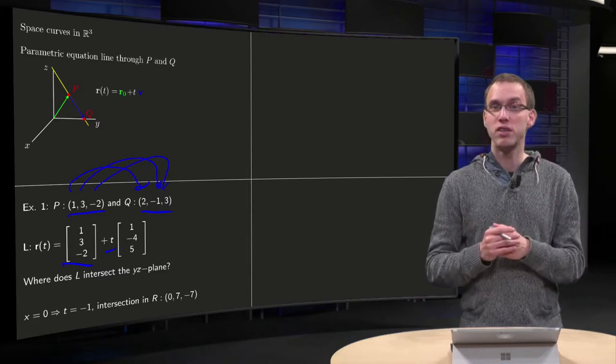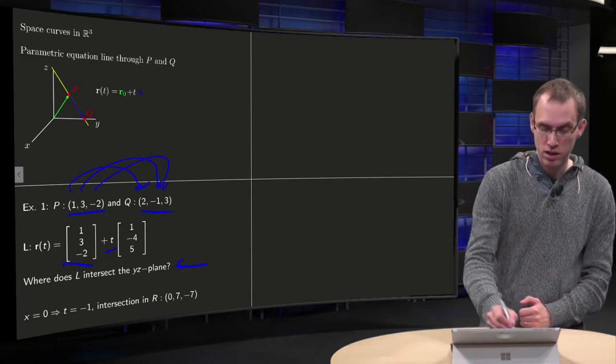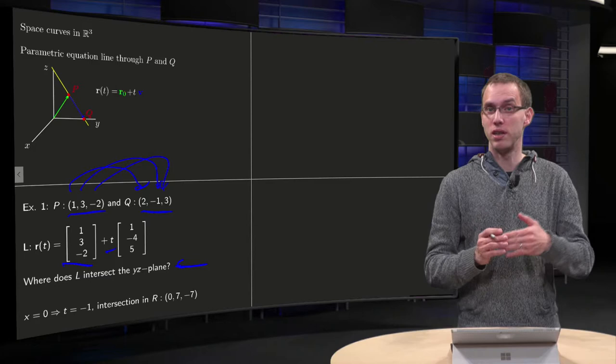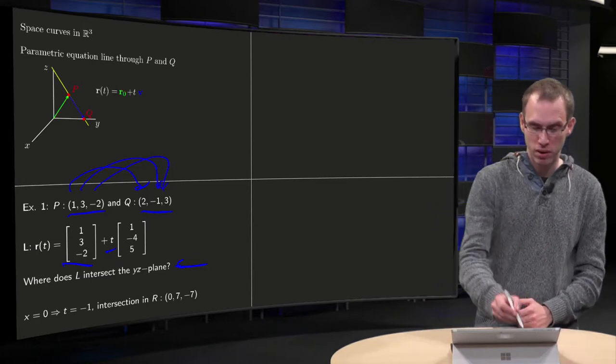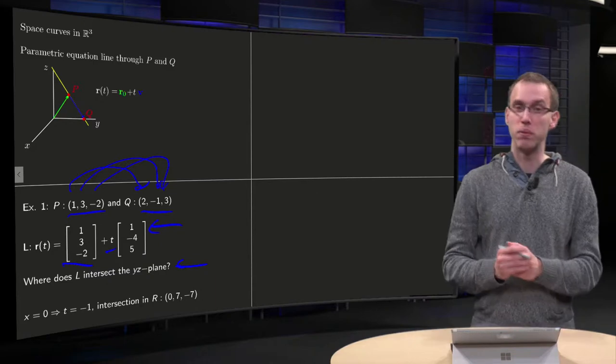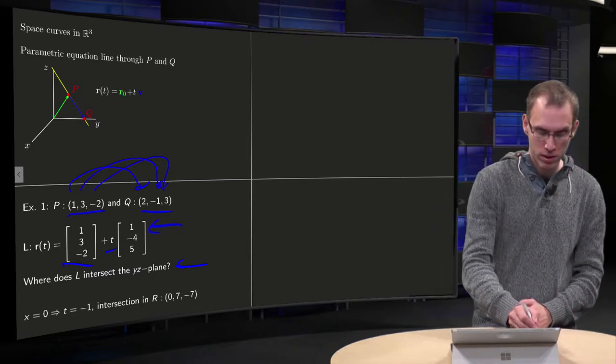So what can you do with such an equation? Well we can for example find out where the line intersects the yz plane, because in the yz plane we have x equals 0. If we have x equals 0, the x over here, which is 1 plus t, has to be 0, so t has to be minus 1. So there we go.